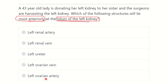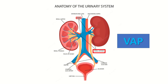We have to find which structure lies most anteriorly at the level of the hilum of the left kidney. Here we can see the right kidney and the left kidney, with the ureter draining into the urinary bladder. We can see the inferior vena cava lying most anteriorly and the descending thoracic aorta posteriorly.